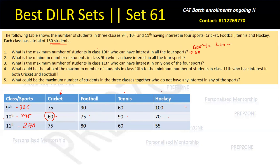Question 2: What is the minimum number of students in class 9 who can have interest in all four sports? There are 150 students, which means I have to distribute 325 chocolates. I need to minimize the number of students who get four chocolates, which means I need to maximize the number of students who get at most three chocolates — at least three, two, or one chocolate. If I maximize that number, the four-chocolate count is automatically minimized.